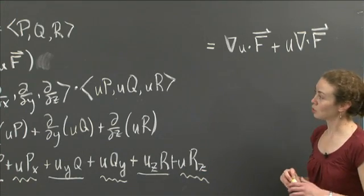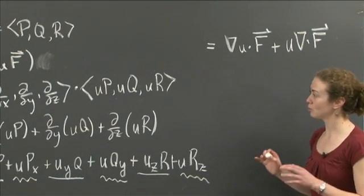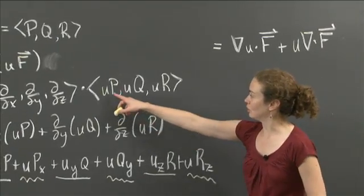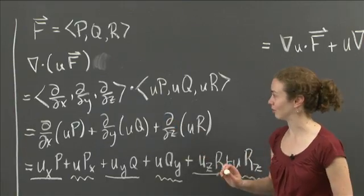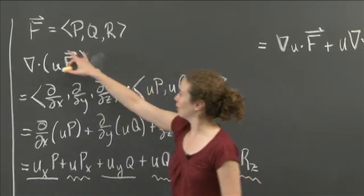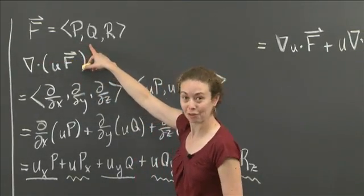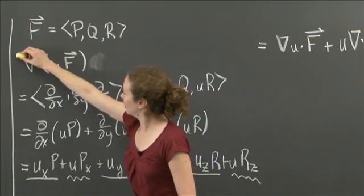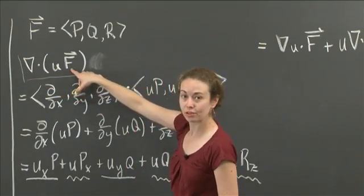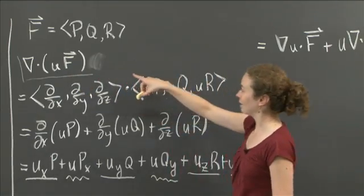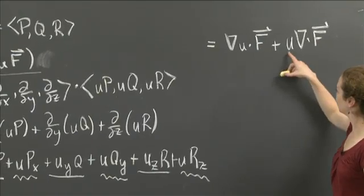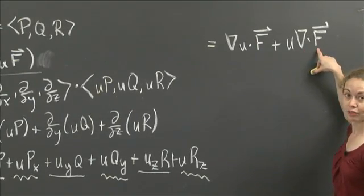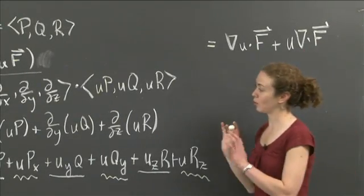So what I have done is for an arbitrary function u, I've assumed that function had first derivatives so that I could do all this stuff. And for a vector field that had first derivatives, I showed that if I take the del operator of u times the vector field, I actually get the gradient of u dotted with the vector field plus u times the del operator of the vector field. So that is what I wanted to show.